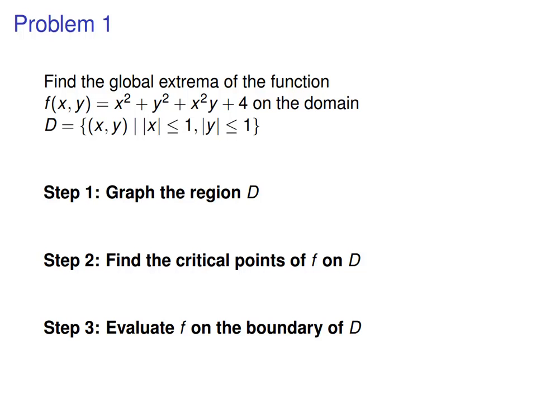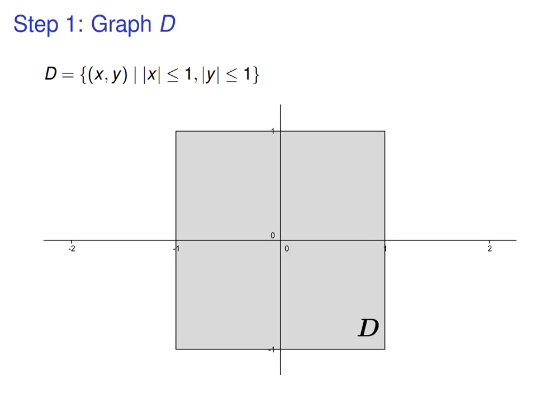So let's start by graphing. So first thing, because the absolute value of x is less than or equal to 1, and the absolute value of y is less than or equal to 1, that means that both x and y go between negative 1 and 1, which means the graph of D is going to be a square. The x values have absolute value between 0 and 1, and so the x itself must be between negative 1 and 1, and the same for the y's. They also go between negative 1 and 1, and there's no connection between the x's and y's, so they're completely independent of each other. So we have our graph of the region, so we're only interested in what the function does on this region, nothing outside of it.